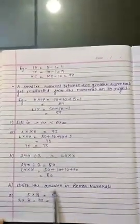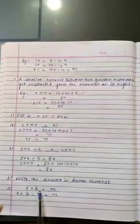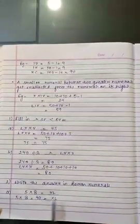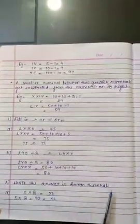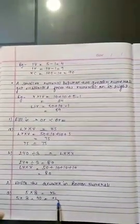Question number 2: Write the answer in Roman numeral. A part, 5 into 8. 5 into 8, the answer will be 40. But, the question says, you have to write the answer in Roman numeral. So, convert 40 into Roman numeral. The answer will be XL.